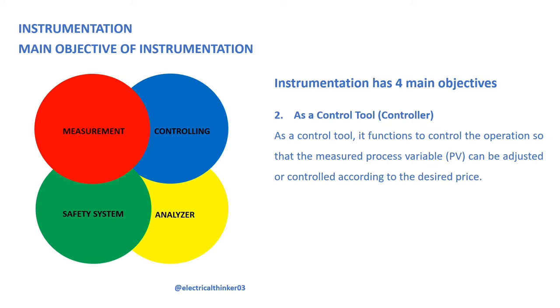Two, as a control tool — controller. As a control tool, it functions to control the operation so that the measured process variable, PV, can be adjusted or controlled according to the desired value.